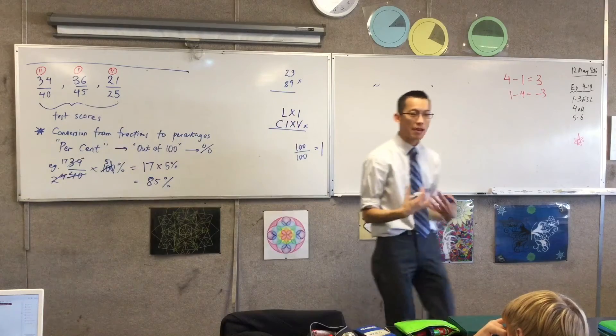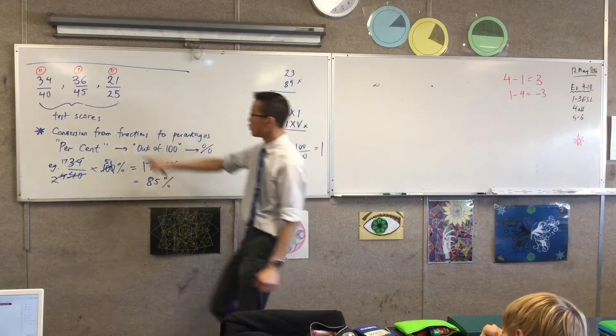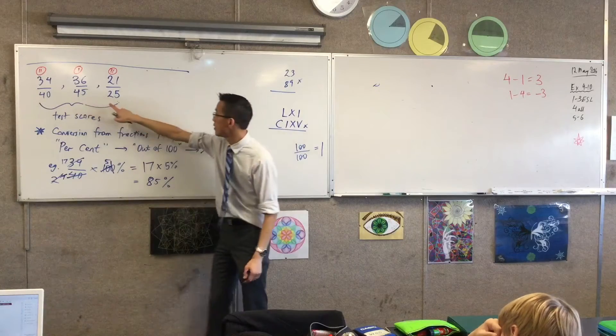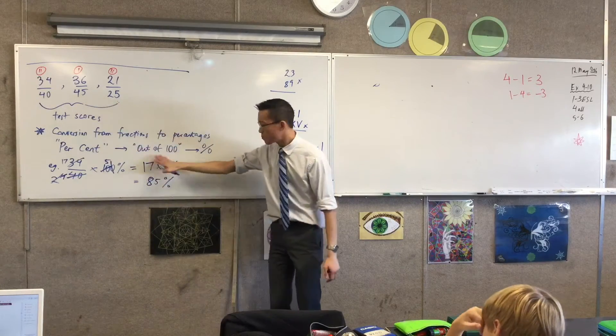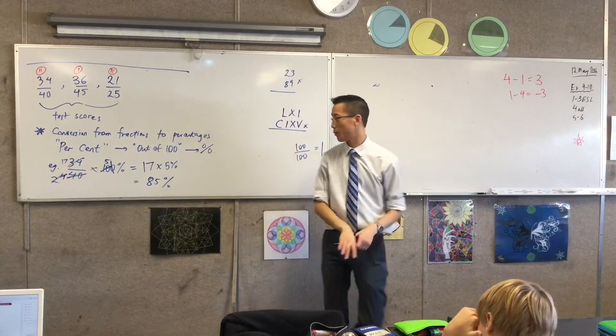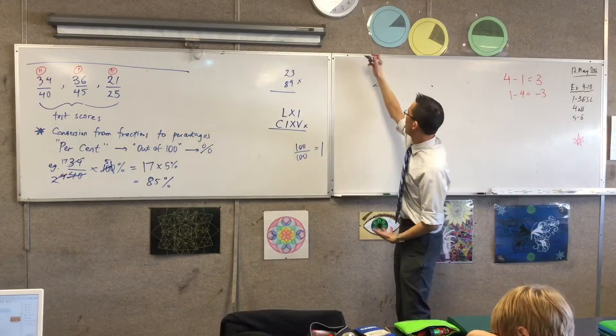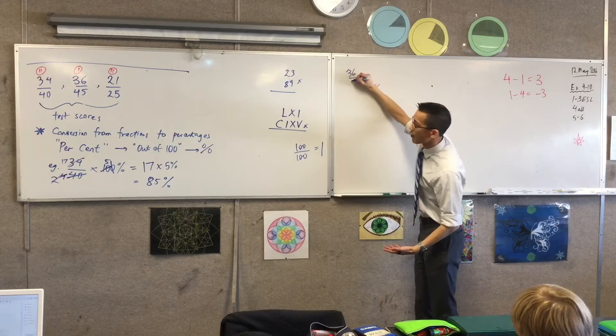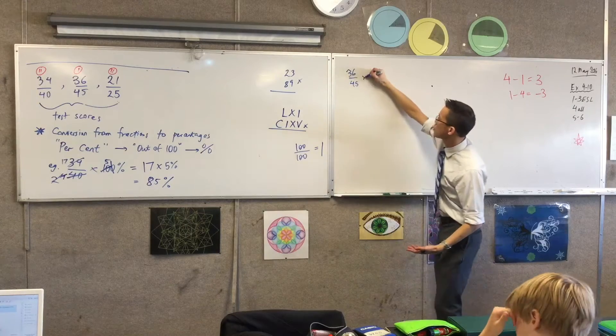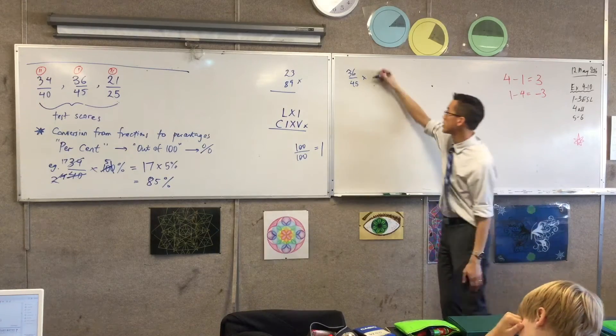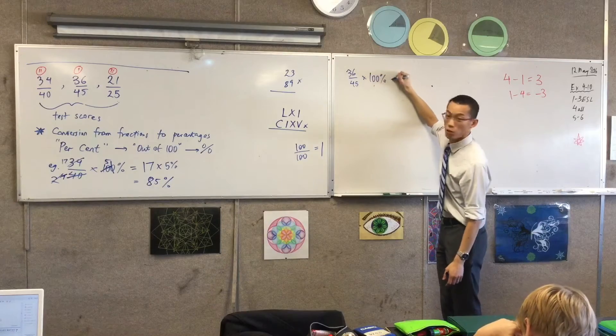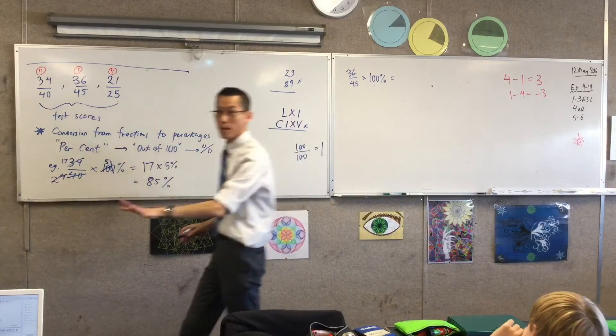Now I can do this same conversion with the other numbers, the other pair. Can you do that for me? 36 out of 45 and 21 out of 25. This process here, I'll give you a bit of a head start on me, but I will do it on the board too, so we're clear. Can you convert 36 out of 45 into a percentage?